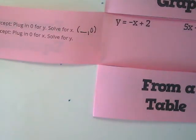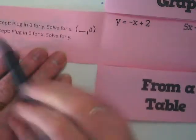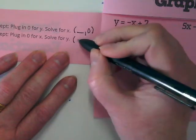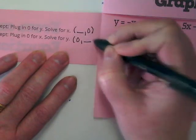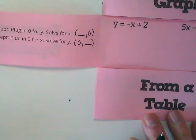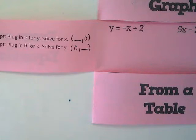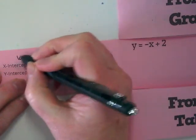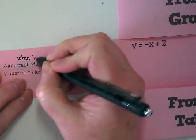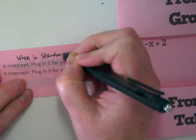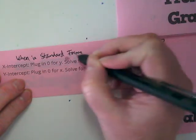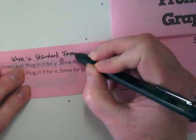We're going to plug in 0 where the y is. And to find the y-intercept, we're going to plug in 0 where the x is and find what the y-intercept is. Now, that works really well when it's in standard form. So add that to your notes. When in standard form.